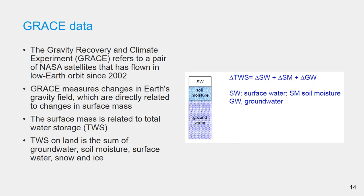Total water storage on land surface is the sum of all the groundwater, soil moisture, surface water, snow, and ice.